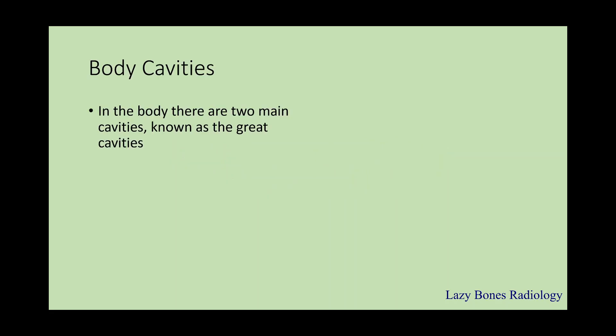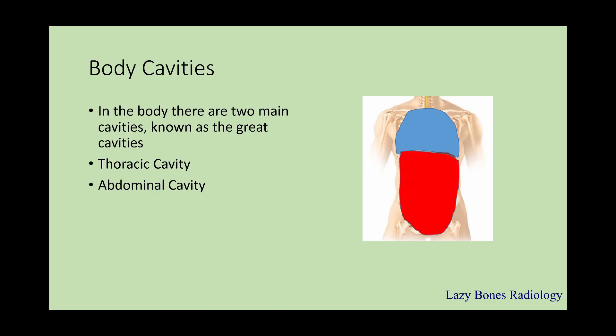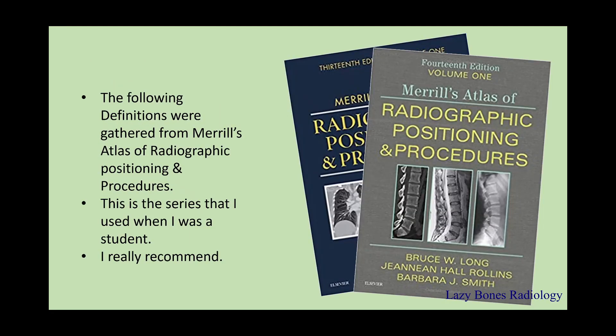Body Cavities. In the body, there are two main cavities known as the great cavities. These include the thoracic cavity and the abdominal cavity. The following definitions were gathered from Merrill's Atlas of Radiographic Positioning and Procedures — a series I used when I was a student, so I highly recommend it.